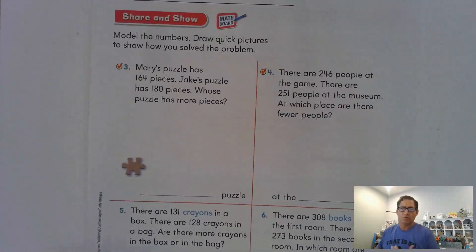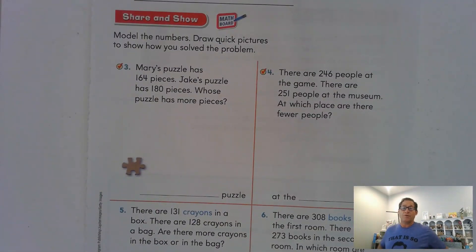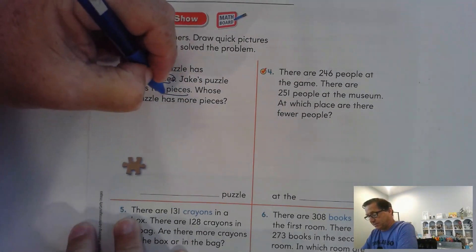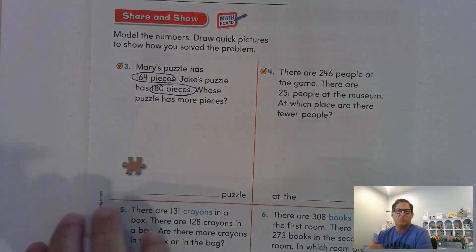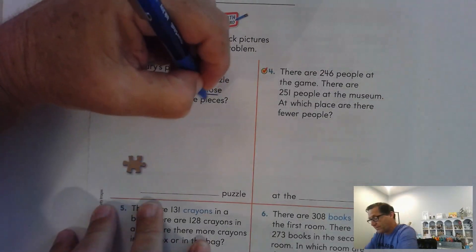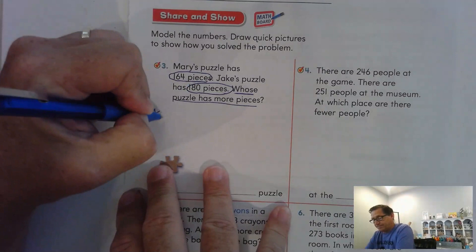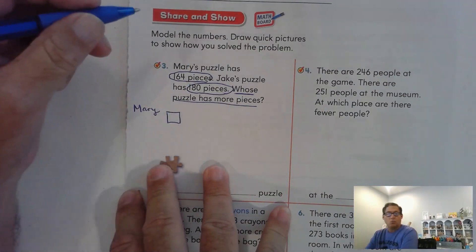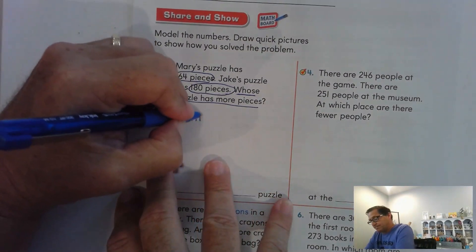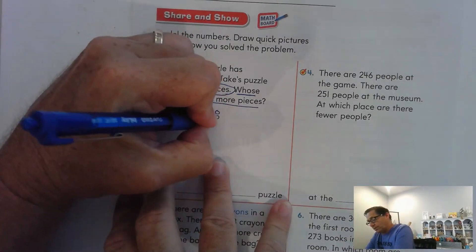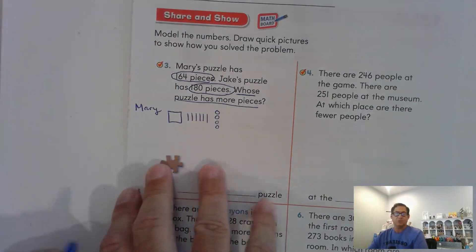Let's go to page 99. Again, model the numbers and draw quick pictures to show how you solve the problem. So Mary's puzzle has 164 pieces. Jake's puzzle has 180 pieces. Whose puzzle has more pieces? So which number is largest? So I'm going to identify Mary. I'm going to say that she has 100 block. She has six tens, and she has four ones. So 164.